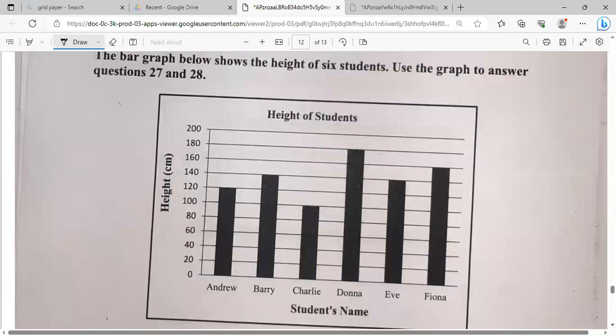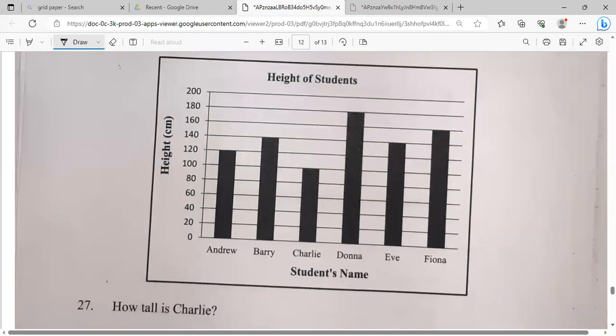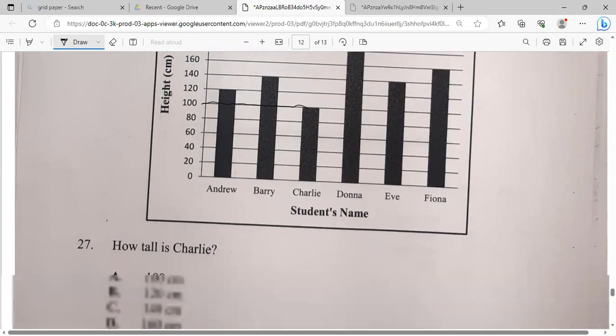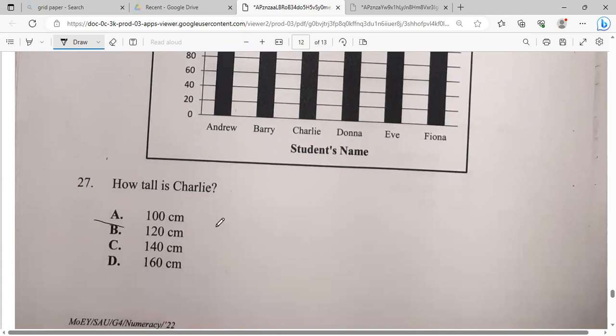A bar graph below shows the height of students. Use the graph to answer questions 27 and 28. And we have Andrew, Barry, Charlie, Donna, Eve, Fiona. Students' name and their height over here. And here's the title, height of students. On my class, we'd have done a bar graph like this, pie chart, all of that, and they'd have done it from scratch. So expecting everyone to just run through this. Our title is Charlie. So first we find Charlie, and then we go across. And that match is with 100. So Charlie is 100 centimeter. So that would be 100. That's it, guys.